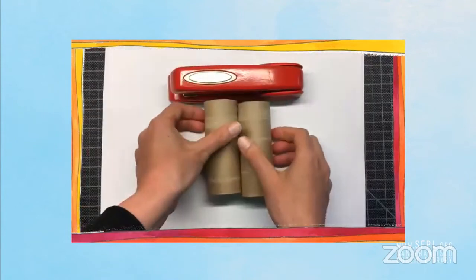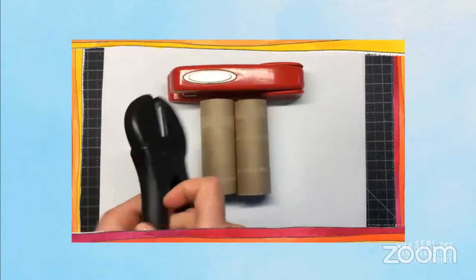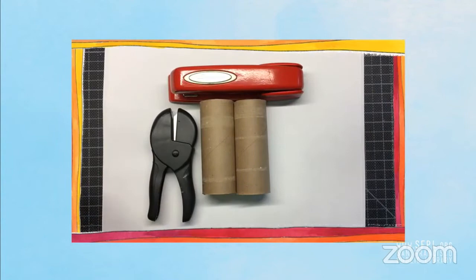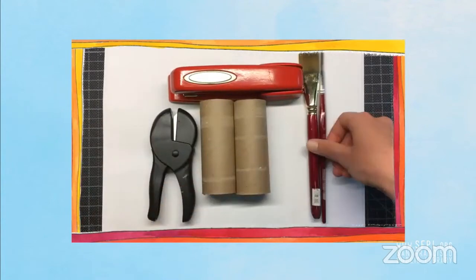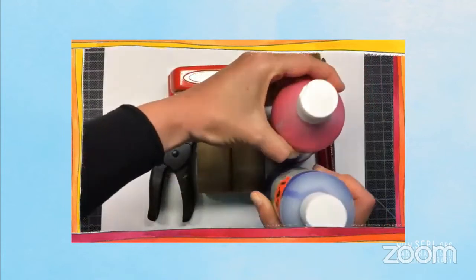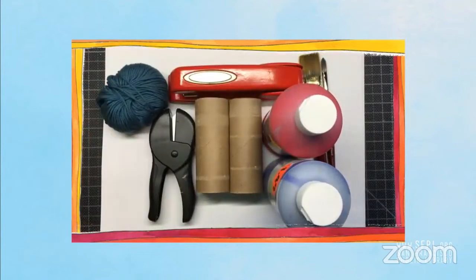You'll need a stapler, two toilet paper rolls, a hole punch, a paintbrush or two, whatever color paint you want, and yarn or string.